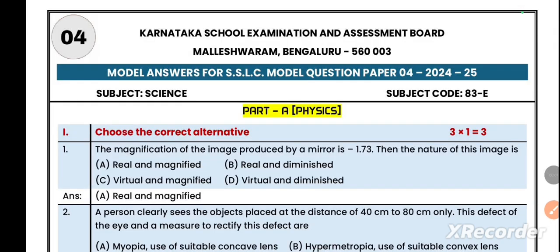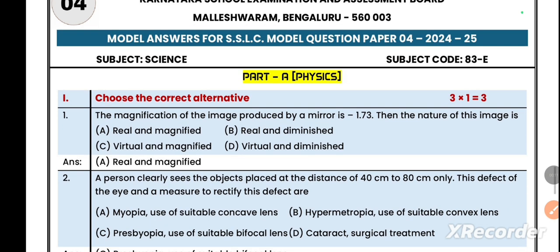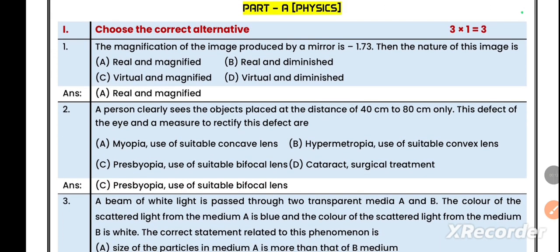Very good morning. Today we are going to discuss the 2024-25 science model question paper number four, the physics part. Let's start with question number one. They asked multiple choice questions, each carrying one mark.